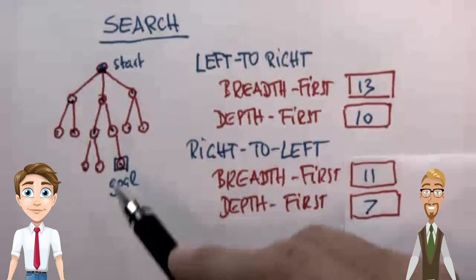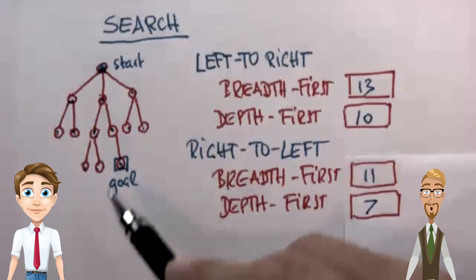Answer is, if we search from left to right, breadth first search explored 13 nodes, depth first search explores 10 nodes. If we search from right to left, breadth first search explores 11 nodes, and depth first search explores 7 nodes.